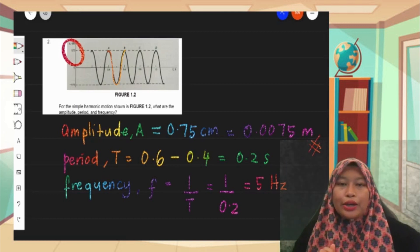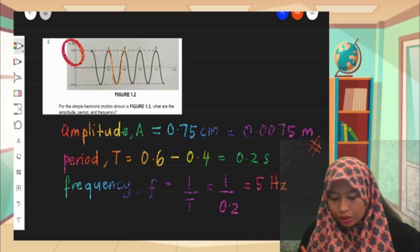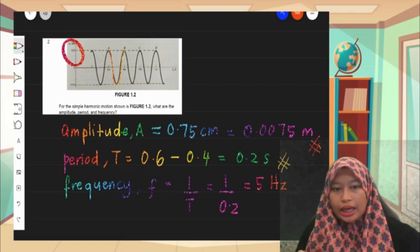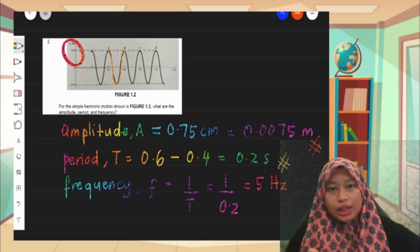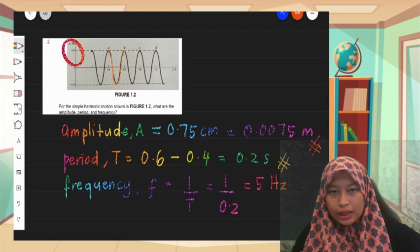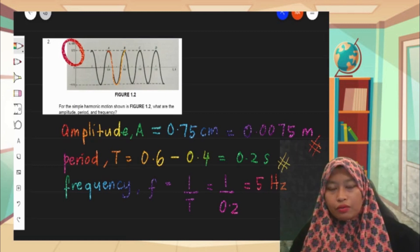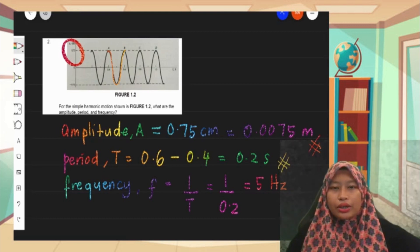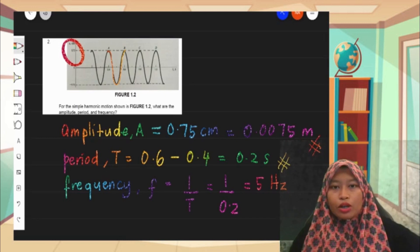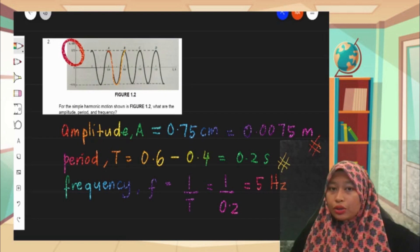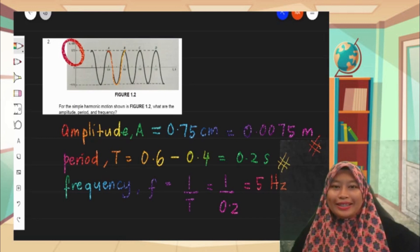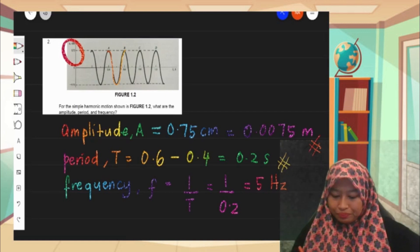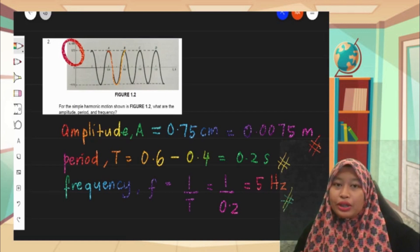For the third one, the question asks for the frequency. Since we already have the time or the period, therefore we can use the formula 1 over T. So 1 over 0.2 is equal to 5 hertz. So that's all for number two.